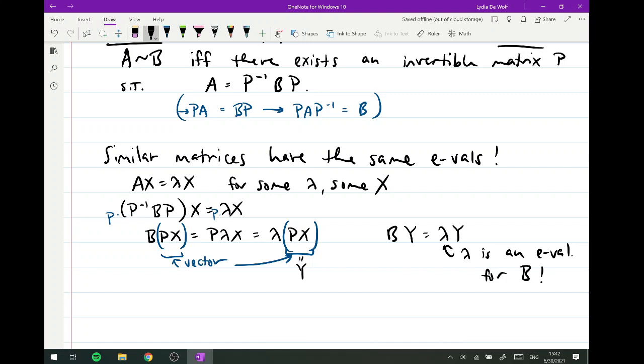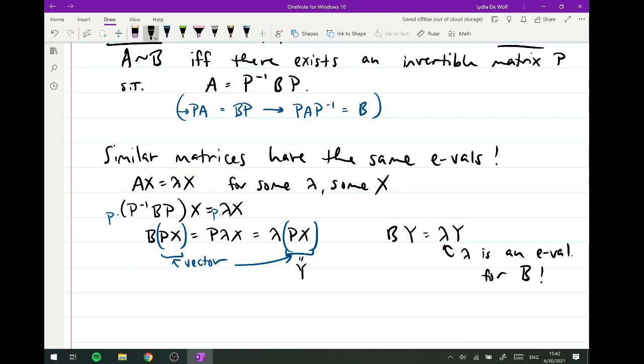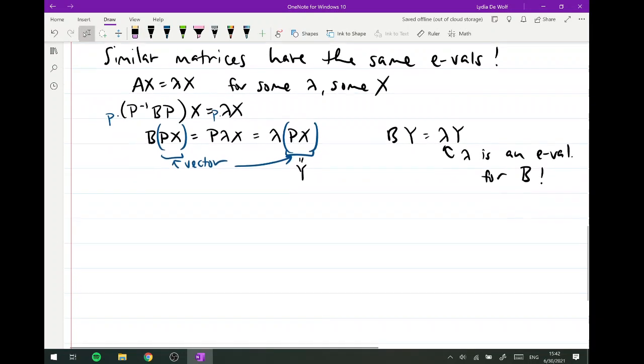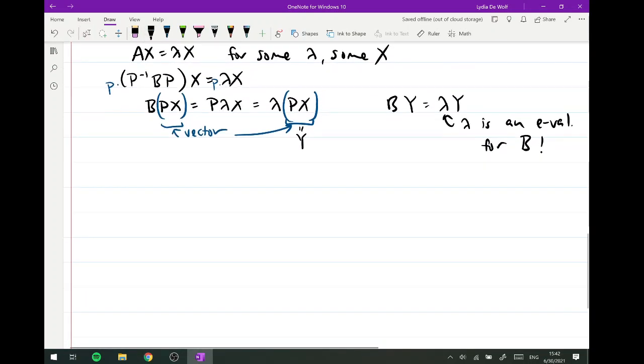And that's exactly what it means to say that lambda is an eigenvalue for B. So this is why similar matrices have the same eigenvalues. Now the eigenvectors that go with them definitely could be different. In the B situation, the eigenvector that goes with that lambda is PX, not just X. But the eigenvalues themselves are the same. Hang in there with me. You're like, why do I care? Life is going to get easier because of these. But I want to talk about one more thing.